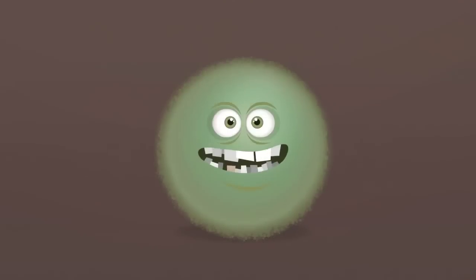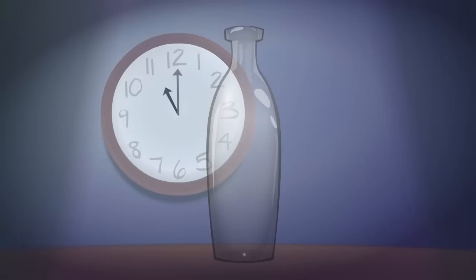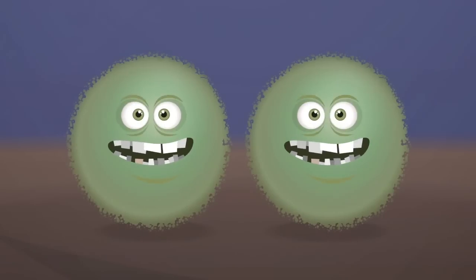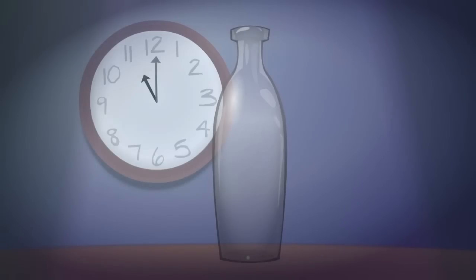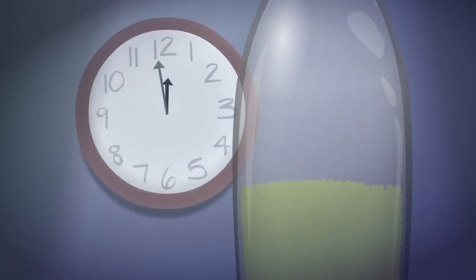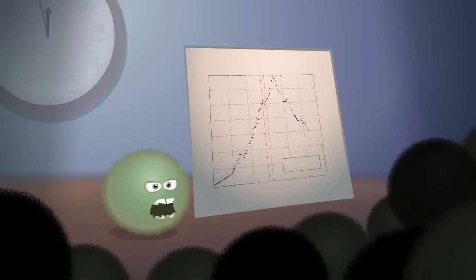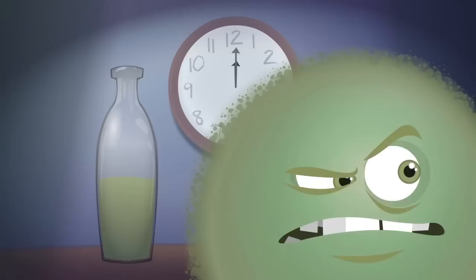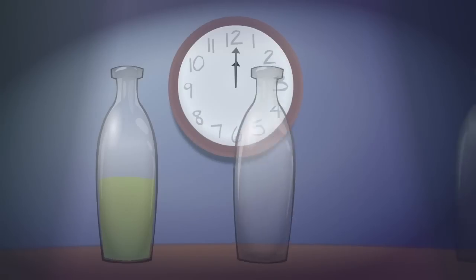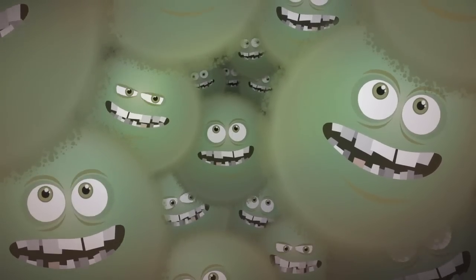These bacteria live in a bottle. Their population doubles every minute. At 11am, there is one bacteria. At 12 noon, the bottle is full. It is half full at 11:59, leaving only enough space for one more doubling. The bacteria see the danger. They search for new bottles and find three. They assume that their problem is solved.